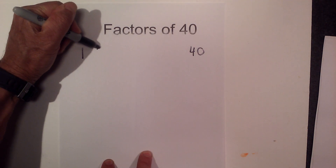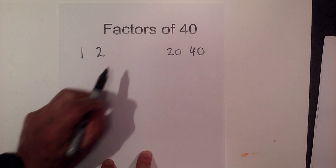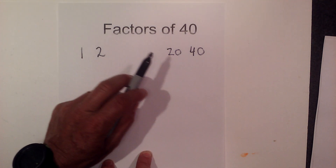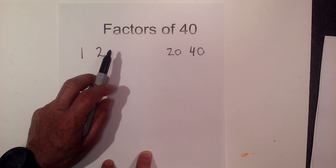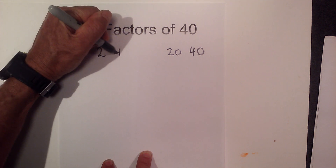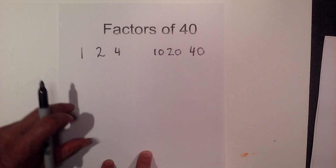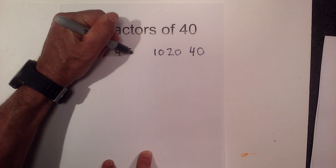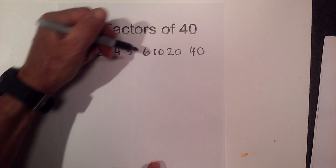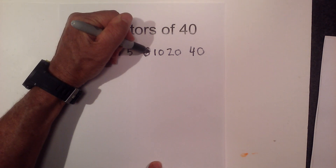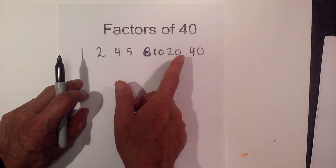I know 2 times 20 equals 40. 3 will not go into 40, but 4 times 10 is 40. Then 5 will go into 40: 5 times 8. Notice how the curtain is closing. And then 6 will not go into 40.